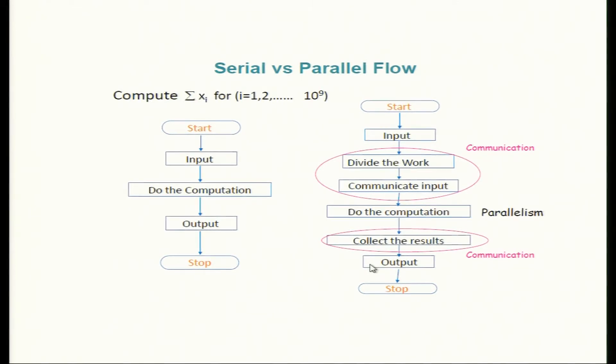This slide shows serial versus parallel flow. On the left side we have a serial program. Taking the example from yesterday's programming lab session where we added a billion elements: in the serial program we declare variables, generate inputs, do the computation, and produce results. In parallel, there are extra steps. In shared memory programming, communication was implicit — we didn't explicitly say we were doing any communication; it happened behind the scenes.